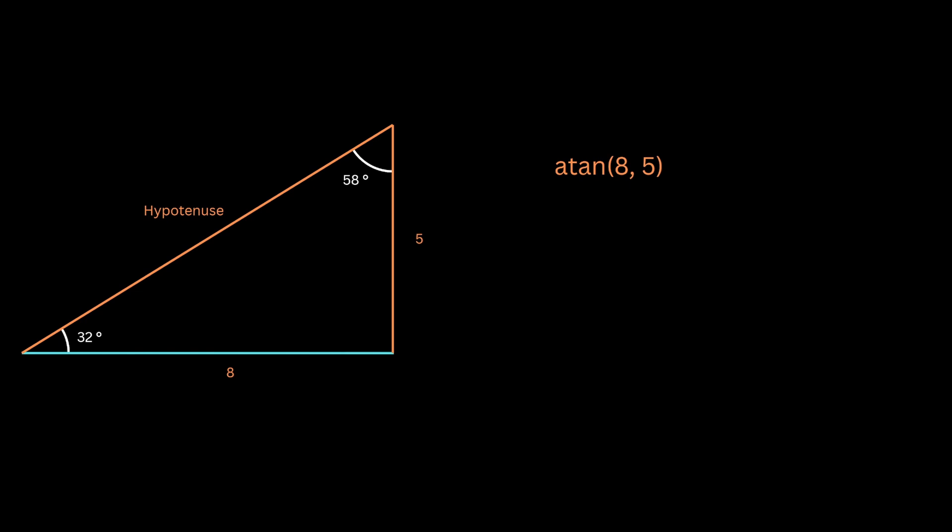One important thing to notice: the atan function will return the angle in radians, and its range will be from minus pi to pi.